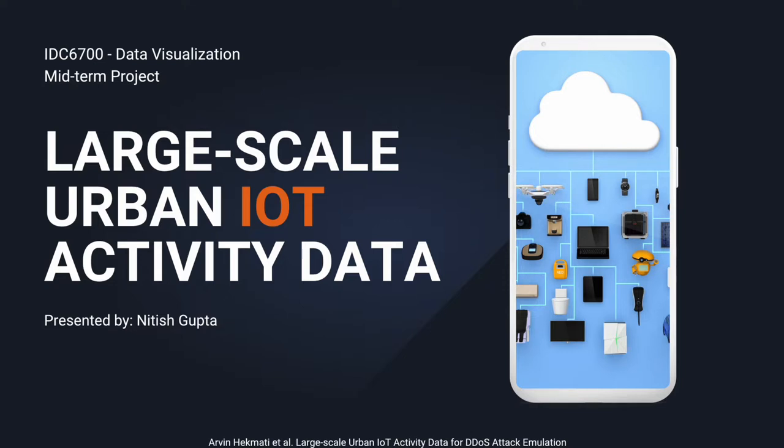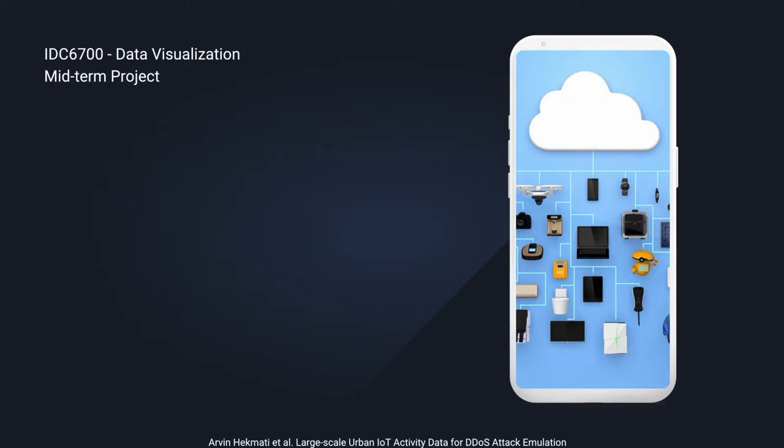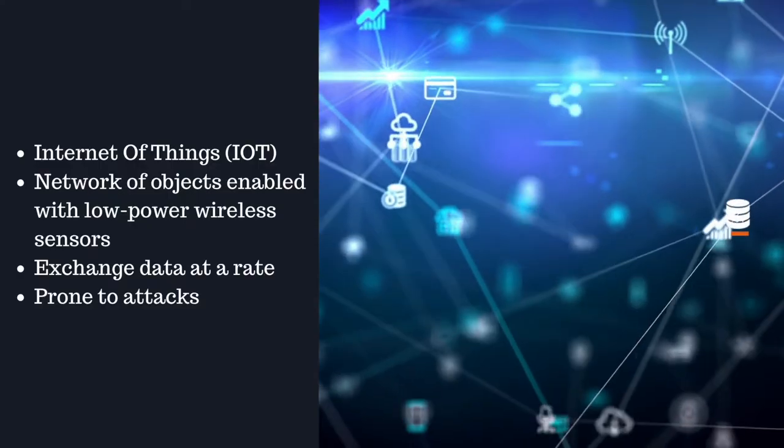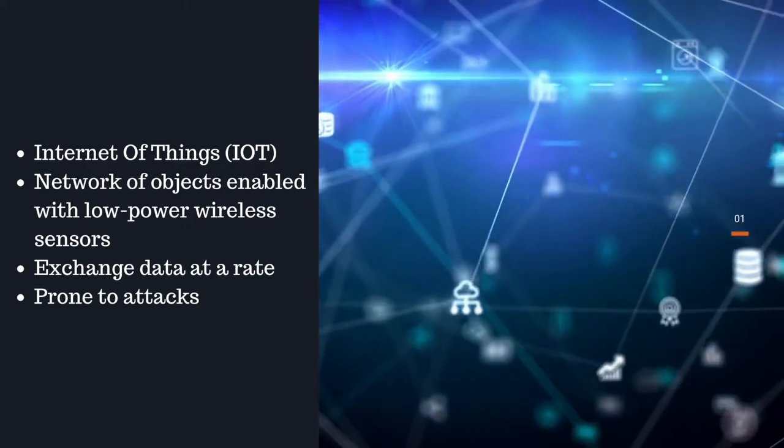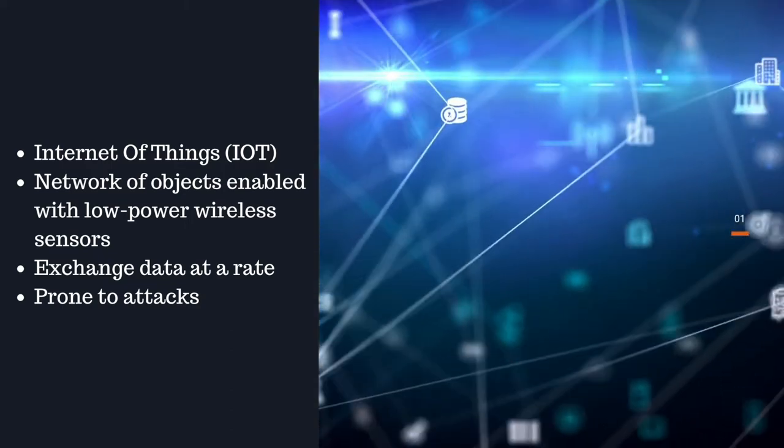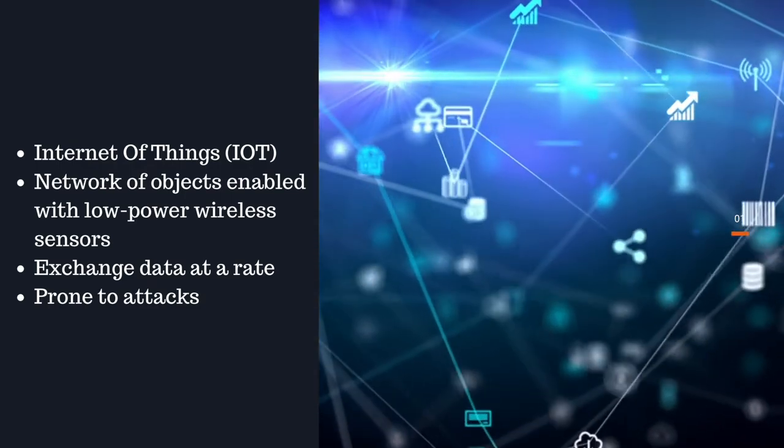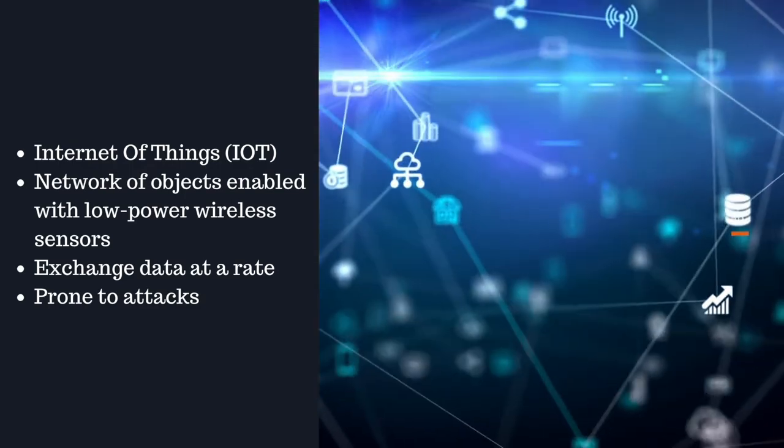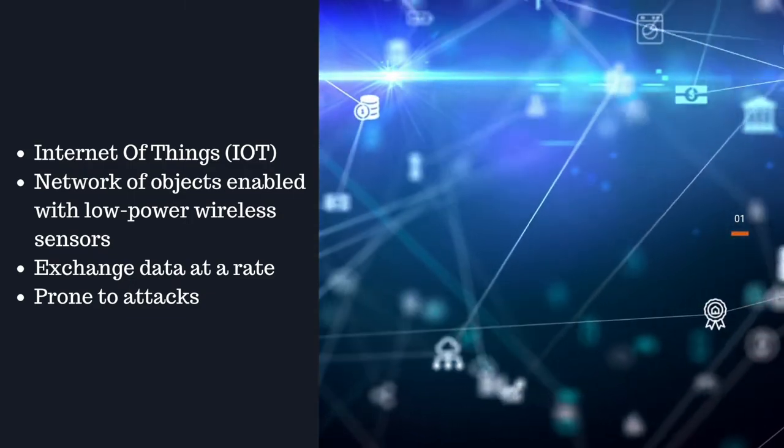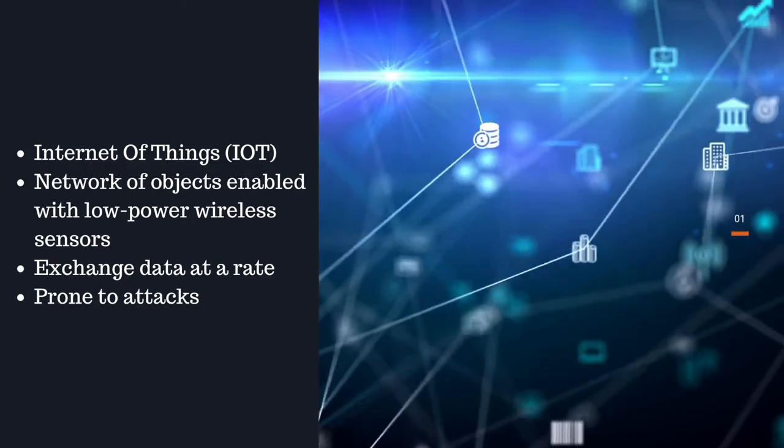Before we get into the dataset and visualization, let's take a brief overview of what IoT is. IoT, as it stands for Internet of Things, is a network of physical objects consisting of sensors, also called nodes, that connect to other objects over a network, public or shared or local, in order to exchange, collect, and monitor data.